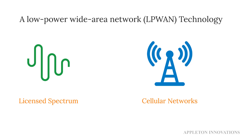NB-IoT, narrowband internet of things, is a long-range communication technology like LoRa. It is a low power wide area network, LPWAN, technology. NB-IoT operates in licensed spectrum — meaning you have to pay for it — unlike LoRa, which we discussed in the previous session.